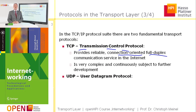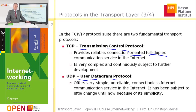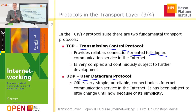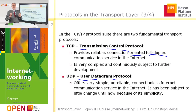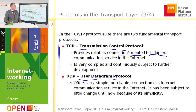Besides the TCP protocol, there is another one — a much simpler protocol on the transport layer: the UDP protocol, the User Datagram Protocol. UDP offers only a very simple, unreliable, and connectionless internet communication service. Due to its simplicity, there has been little change over time. While IP protocol interconnects network interfaces, by means of UDP two applications can interact with each other. But more interesting and with much more features is the TCP protocol, which provides the reliable, connection-oriented, full-duplex service.